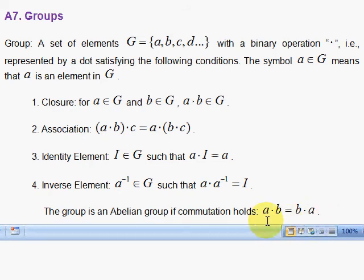If the group has the property that you can perform the binary operation in any order, then we say we have a commutative group or an abelian group.